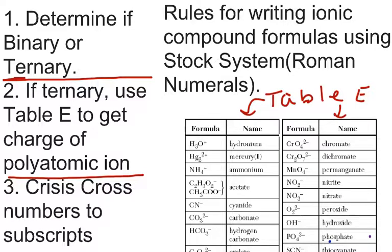And then the third step, it simply says do the crisscross in terms of numbers and put them to subscripts. Now, I'm trying to emphasize numbers only, guys, because I've noticed that people been crisscrossing, they've been putting the charges, the sign, the negative two, down to the subscript, and that'll get you no points. So we just want to make sure that we're on the same page with this topic here.